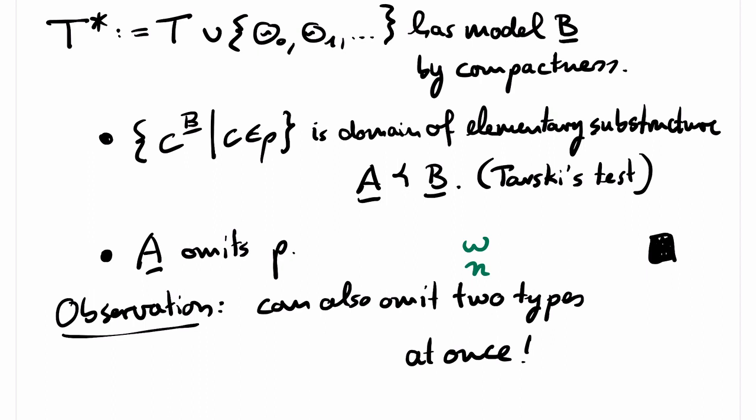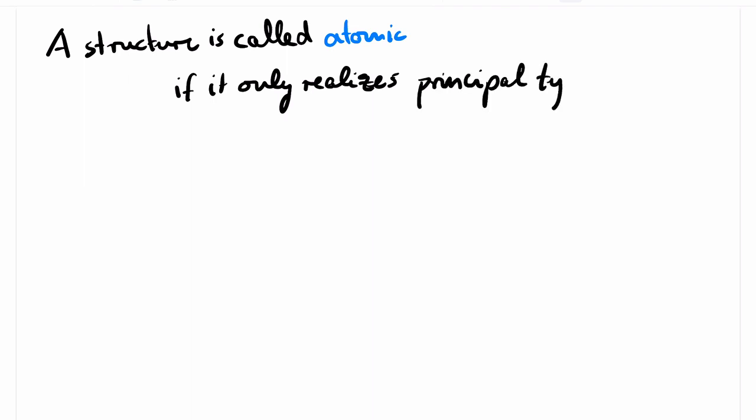We are almost at the end of this video. I would like to show you an interesting immediate consequence of the omitting types theorem that we will also need in the next video. A structure is called atomic if it only realizes principal types. All non-principal types must be omitted.